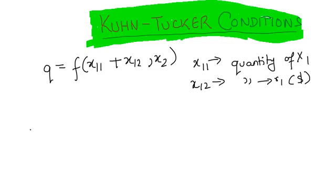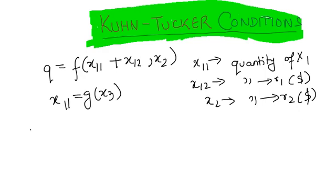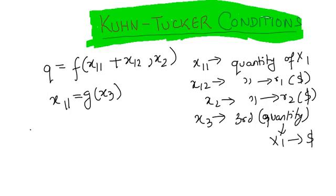The entire unit x2 of the second input is purchased at the fixed price r2 dollars per unit. The entrepreneur's production function for the input x11 equals g(x3), where x3 is the quantity of third input used for production function of x1. Its constant price is r3 dollars.